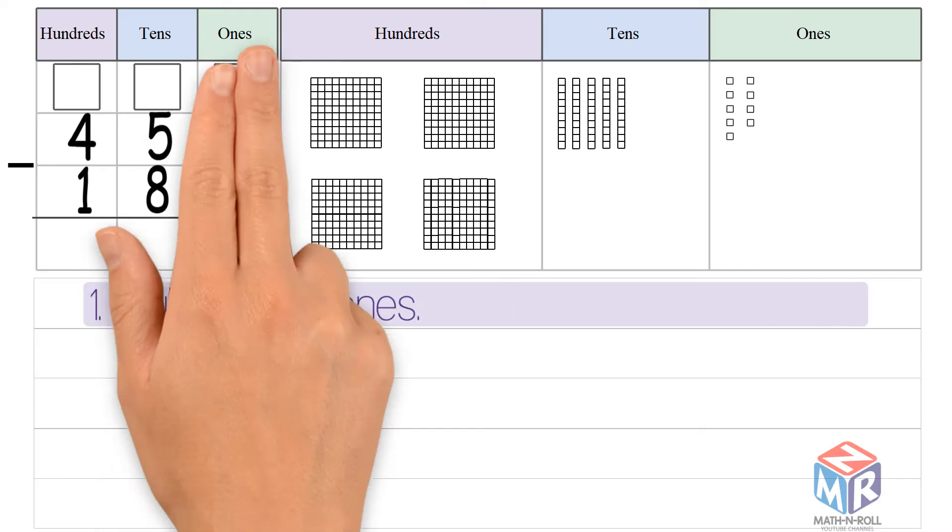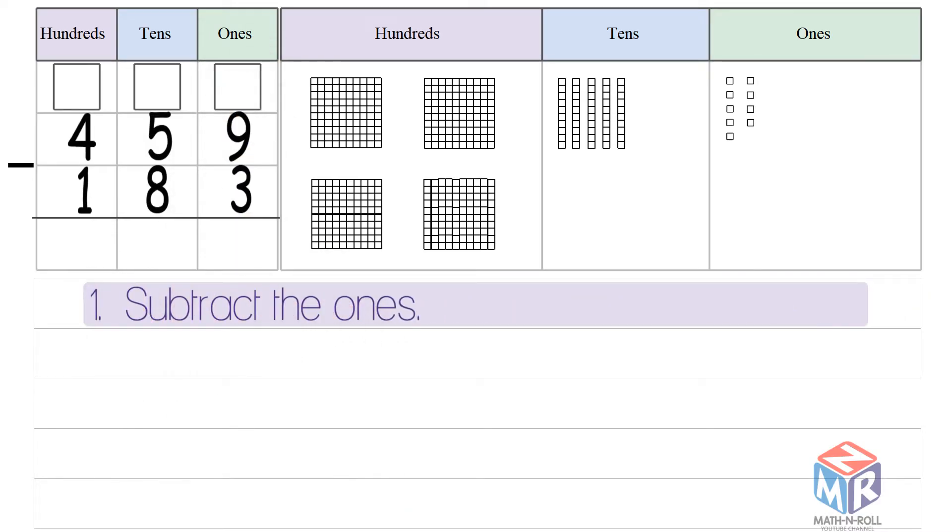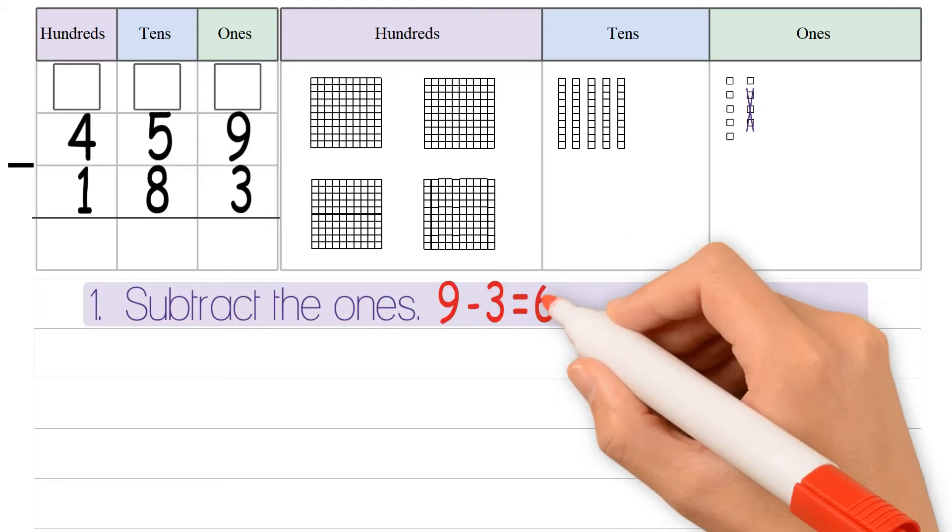First, we subtract the ones. 9 minus 3 can be subtracted, so 9 minus 3 is equal to 6.